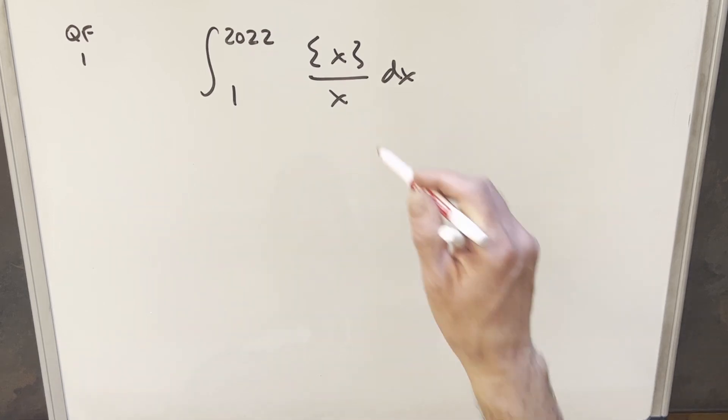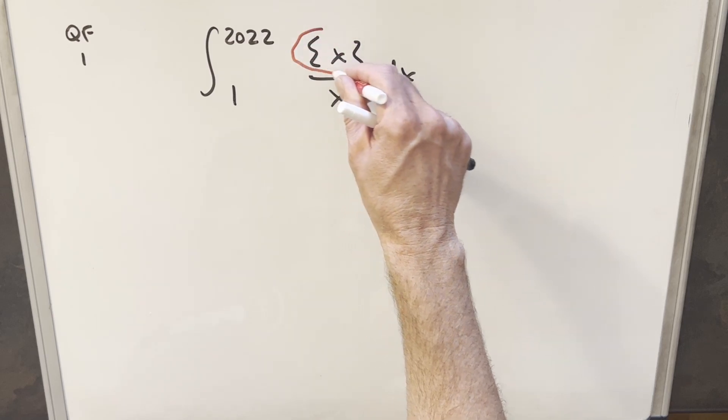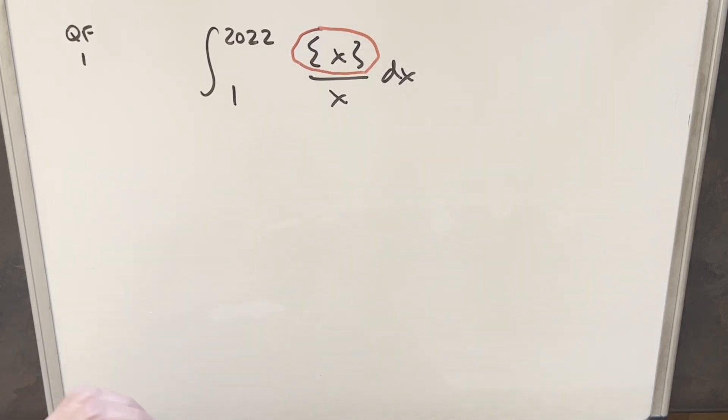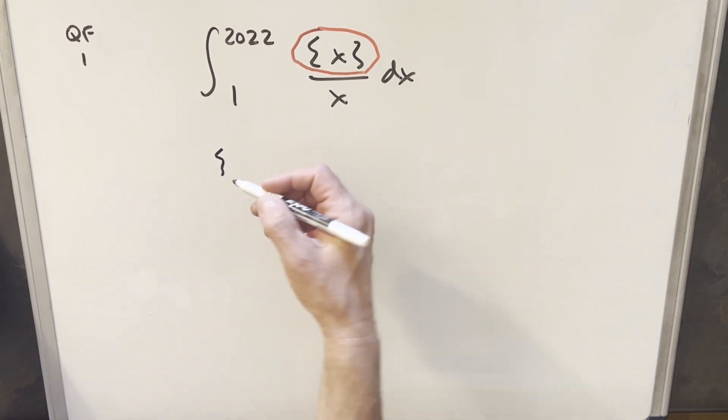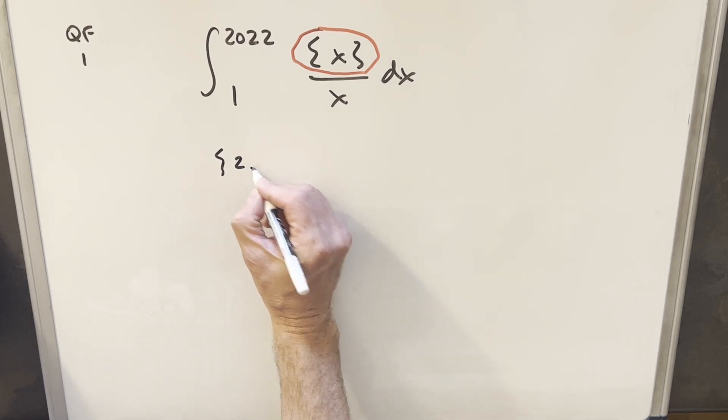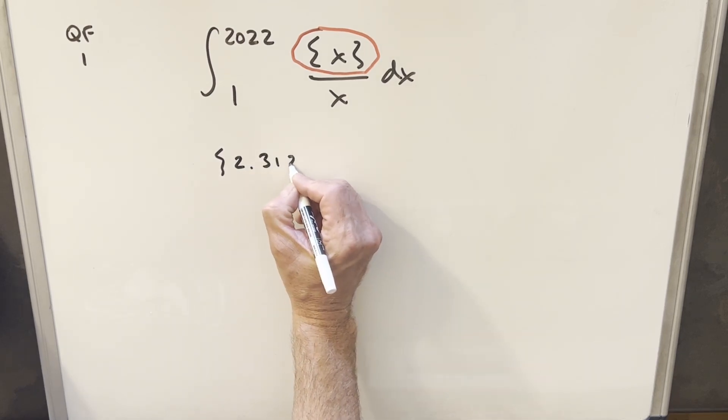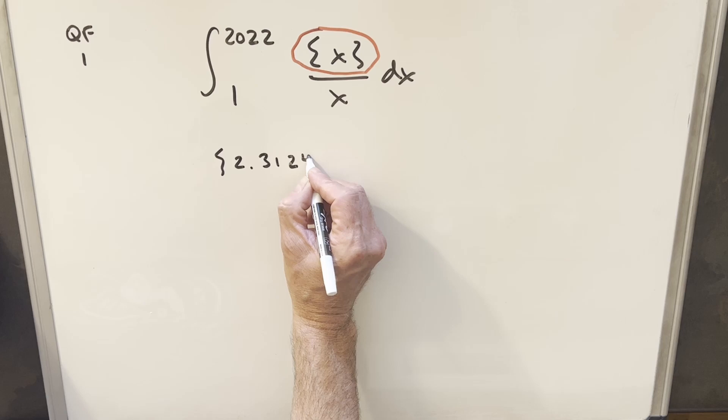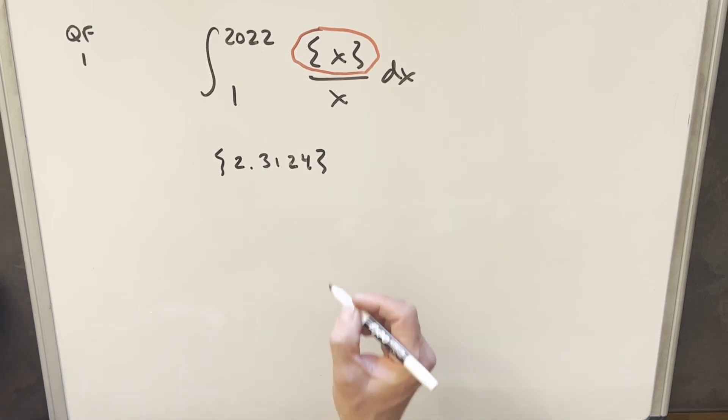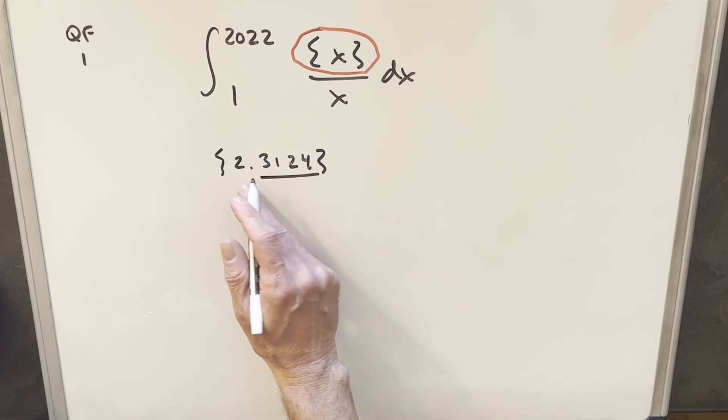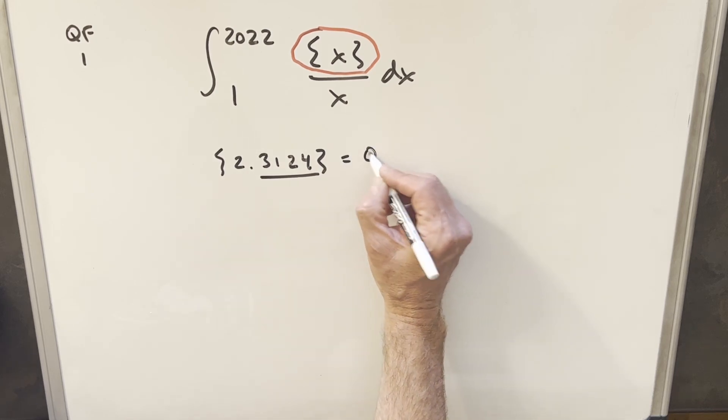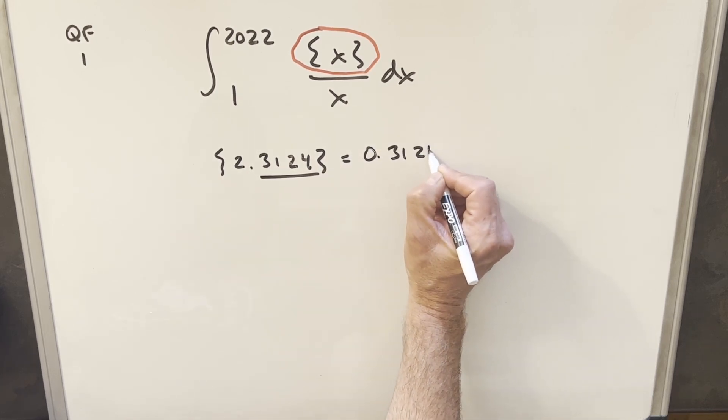The first thing we really need to deal with is what do we do with the fractional part there in the numerator? How do we handle that? The first thing to talk about is what is the fractional part. So let's look at an example. If our x value, let's say we're looking at the fractional part of 2.3124, well, the fractional part of this is just going to be the decimal part, removing the integer part. So this would actually be just 0.3124.